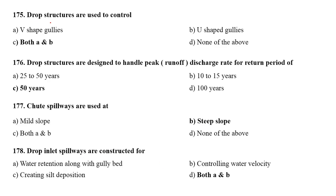Drop structures are used to control the V-shaped gullies or U-shaped gullies. The right answer is both V- and U-shaped gullies. Drop structures are designed to handle peak runoff discharge rate for return period of 50 years.